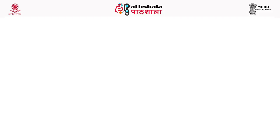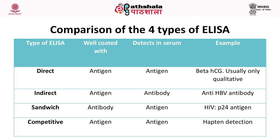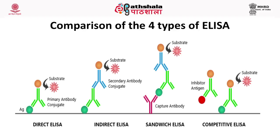Comparing the four types of ELISA: in sandwich ELISA, the well is coated with antibody; in other types, the well is usually coated with antigen. Indirect ELISA is used for the detection of antibodies — that is very important. Competitive ELISA is used for the detection of haptens like thyroid hormones. Let us also compare the four types diagrammatically.